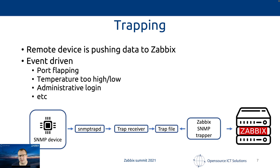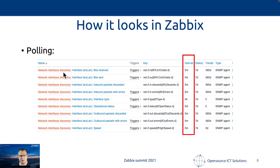How does this look in Zebix? With polling, we are discovering quite a few interfaces, and per interface we are getting metrics — all regarding the LAN. Since this is polling, there is an update interval: every five minutes we request those metrics, or in the case of the interface type, every four hours.